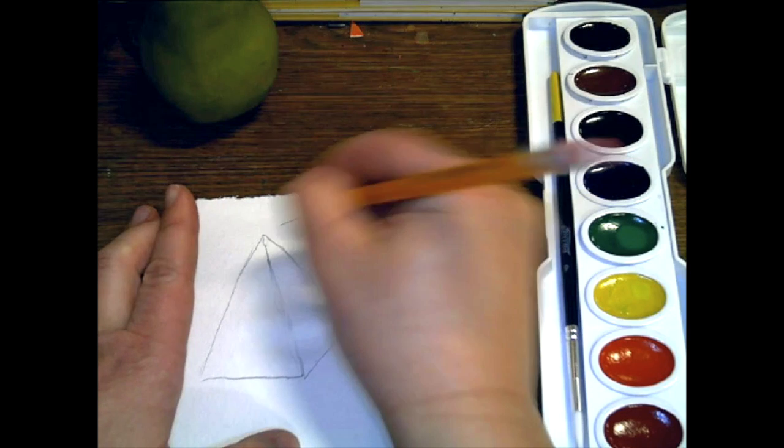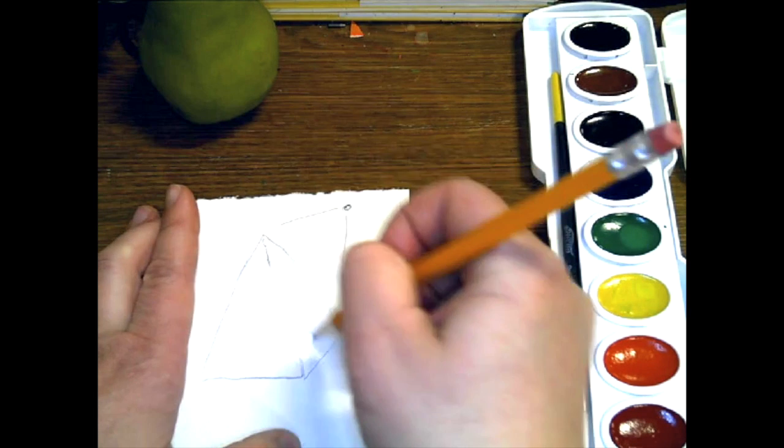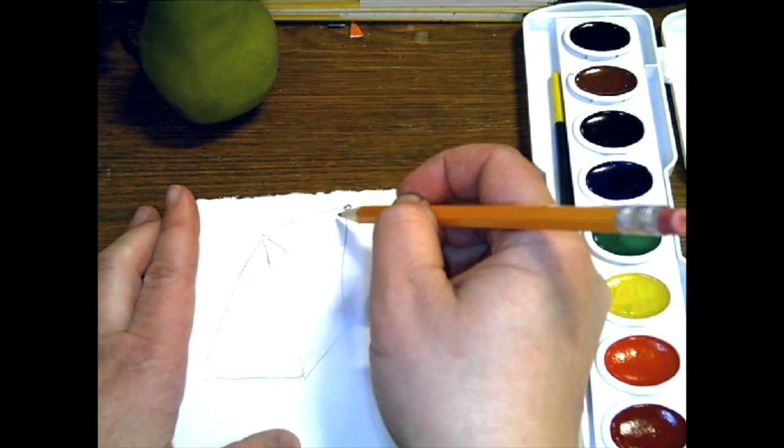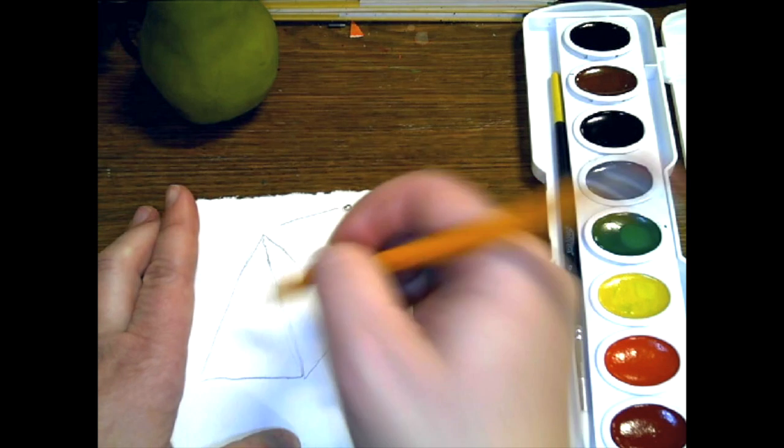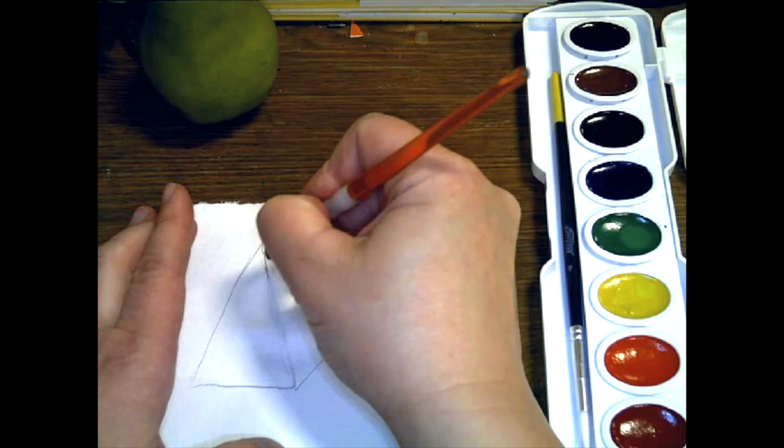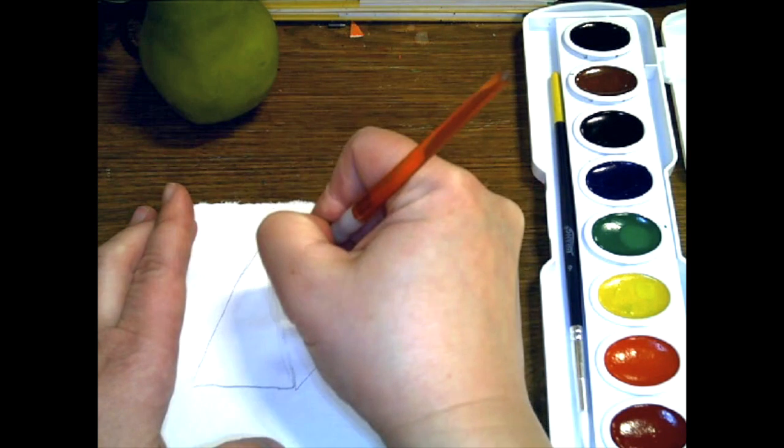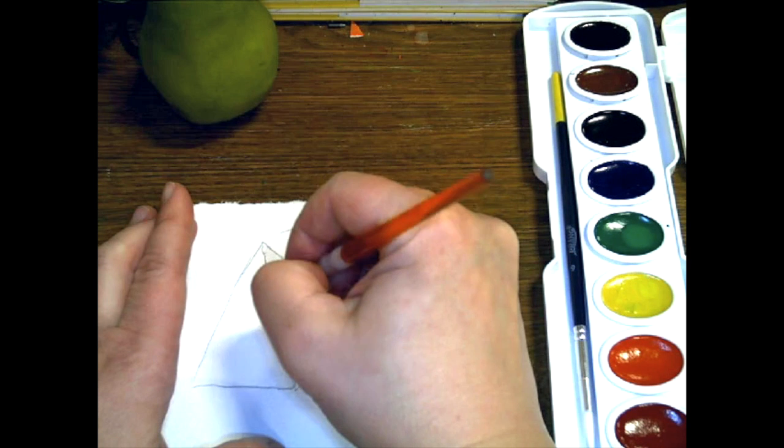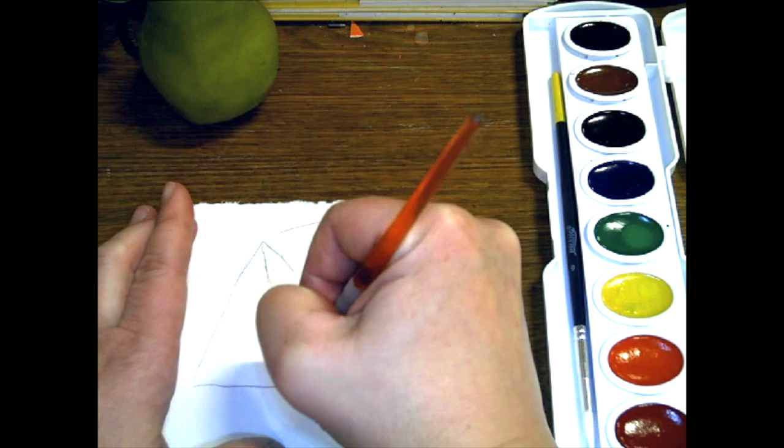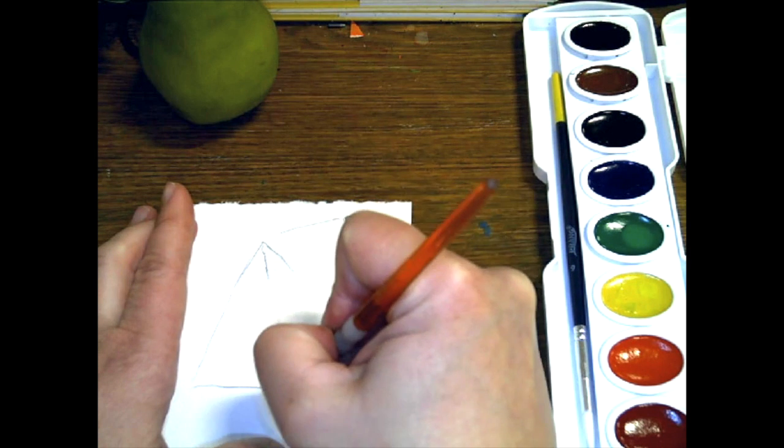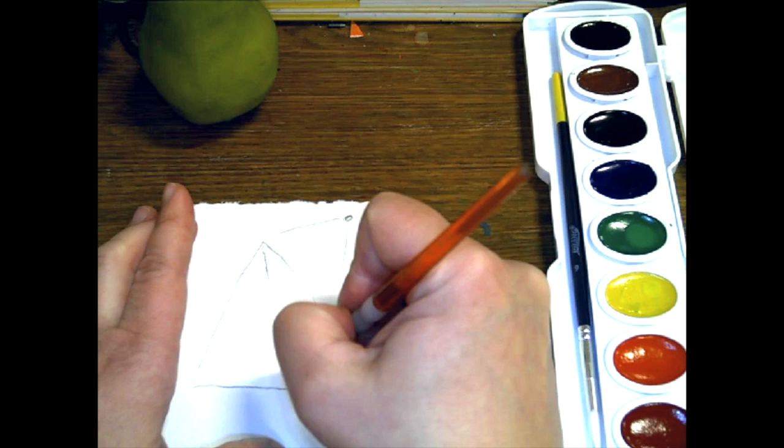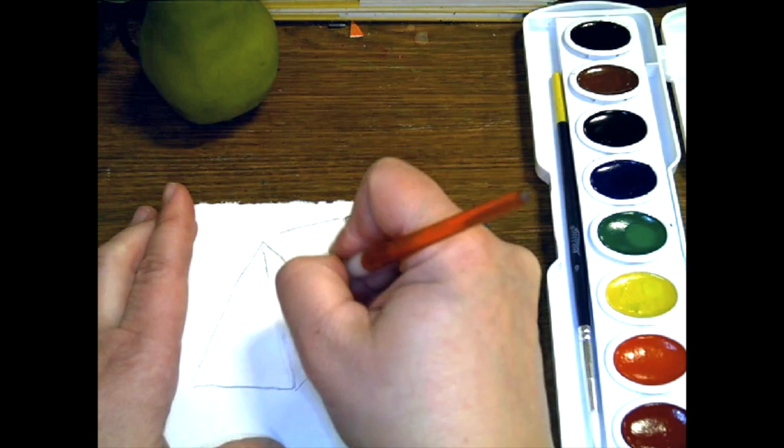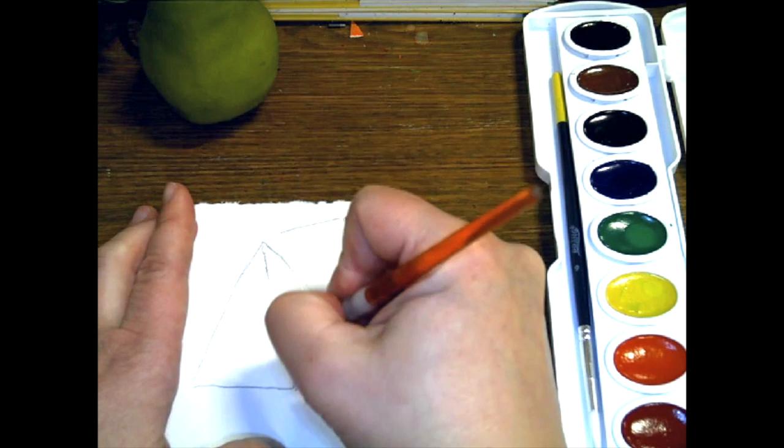So if my light source is here, shining on this, this side is going to be lighter because it's facing the light source, this side will be darker. So if I go back to my gray, before I do anything, I'm going to paint in the side I want to paint in and I'm going to leave just a little sliver on the outside of where I'm painting.